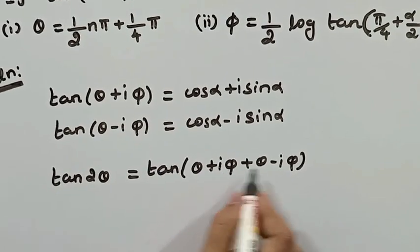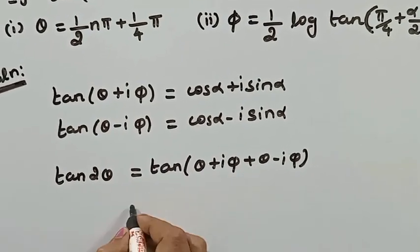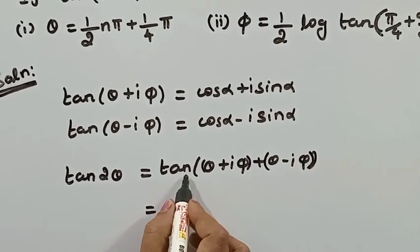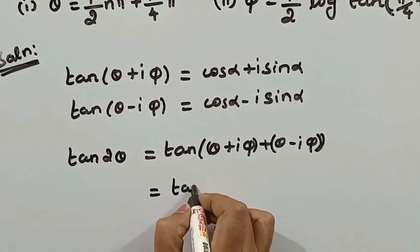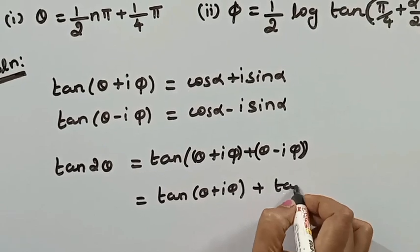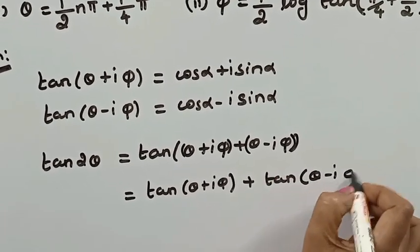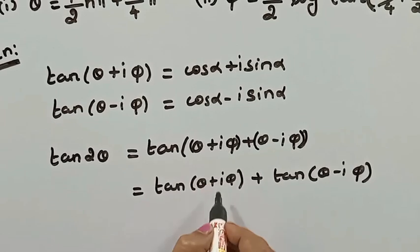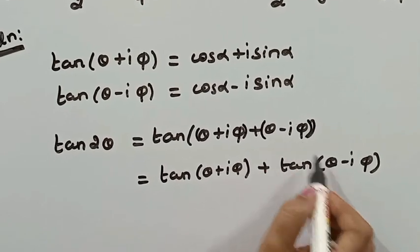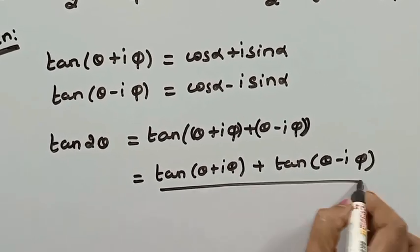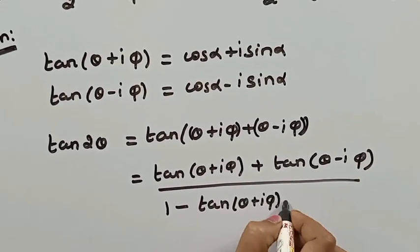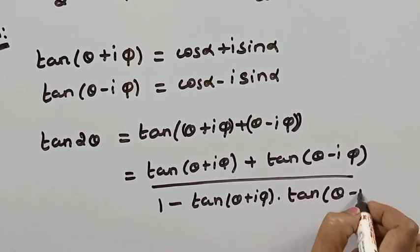We apply the tan(a + b) formula: tan(a + b) = (tan a + tan b) / (1 - tan a · tan b), where a = θ + iφ and b = θ - iφ. So tan(2θ) = (tan(θ + iφ) + tan(θ - iφ)) / (1 - tan(θ + iφ) · tan(θ - iφ)).